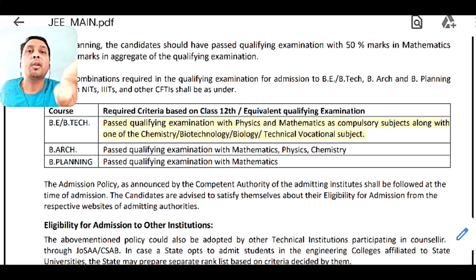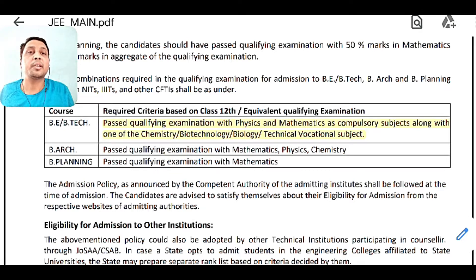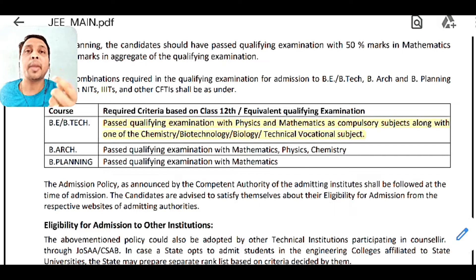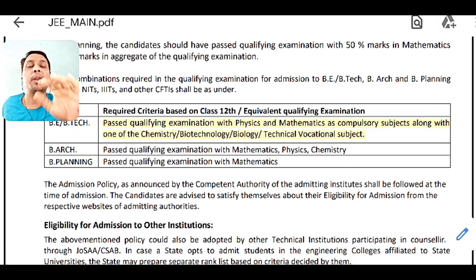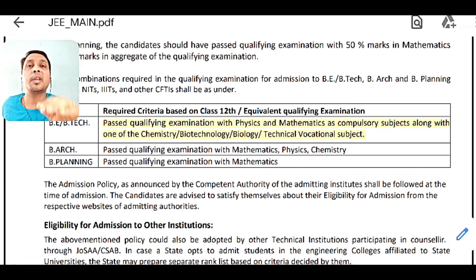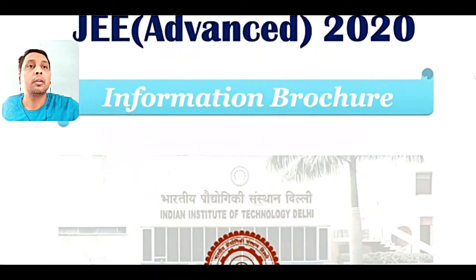This is all about the JEE Main notification. You have seen that diploma is eligible here. For admission in IIT and NIT, there are basically two exams: JEE Main and JEE Advanced. JEE Main is for NIT admission. You have to secure a minimum rank in JEE Main to be eligible to sit in JEE Advanced.